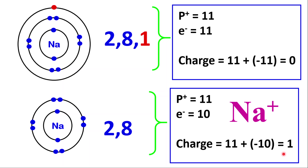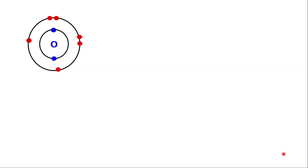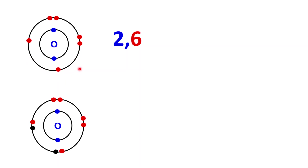Now let's look at our next example: oxygen. Oxygen has 8 electrons, therefore the electronic configuration is 2 and 6. This is a non-metal, so it will gain electrons. Remembering electronic configuration, this shell can hold a maximum of 8, so it can only gain 2 more. The electrons gained are shown in black so you can see the difference. The shell is now 8, requiring 2 to fill it. So the new electronic configuration for the ion is 2 and 8.